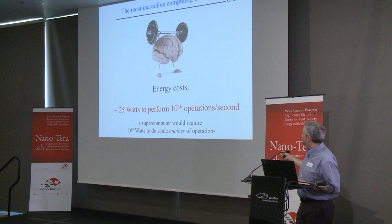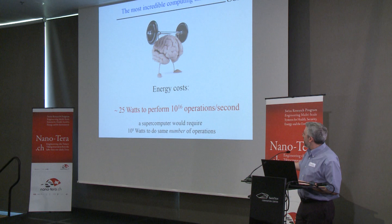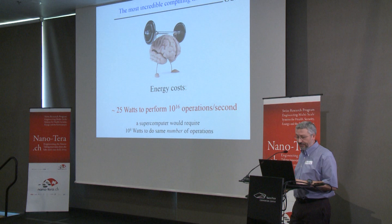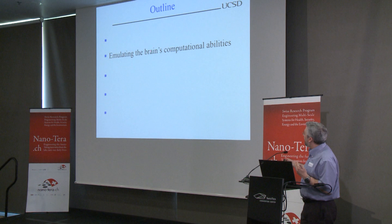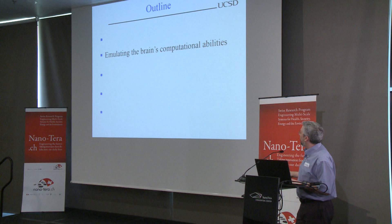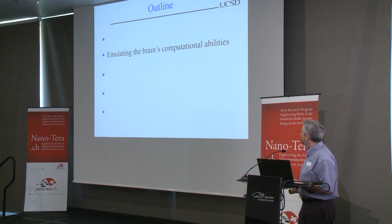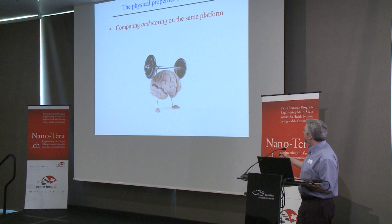The brain is an amazing machine — it operates at very low energy doing massively parallel computation. We want to understand how the brain does this: what are the keys, and can we emulate those in the solid state, in devices? Let's look at the physical properties of the brain.